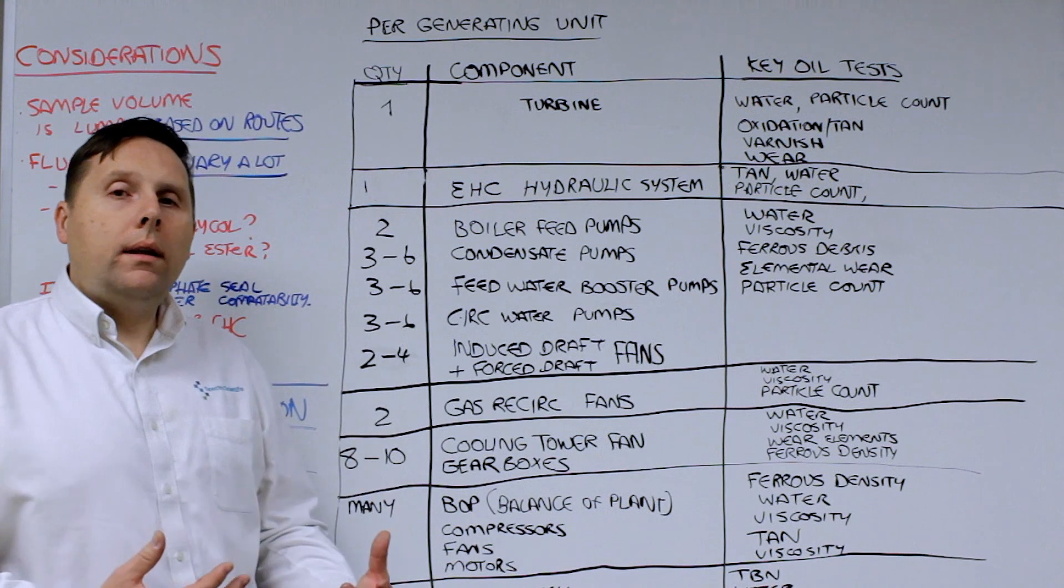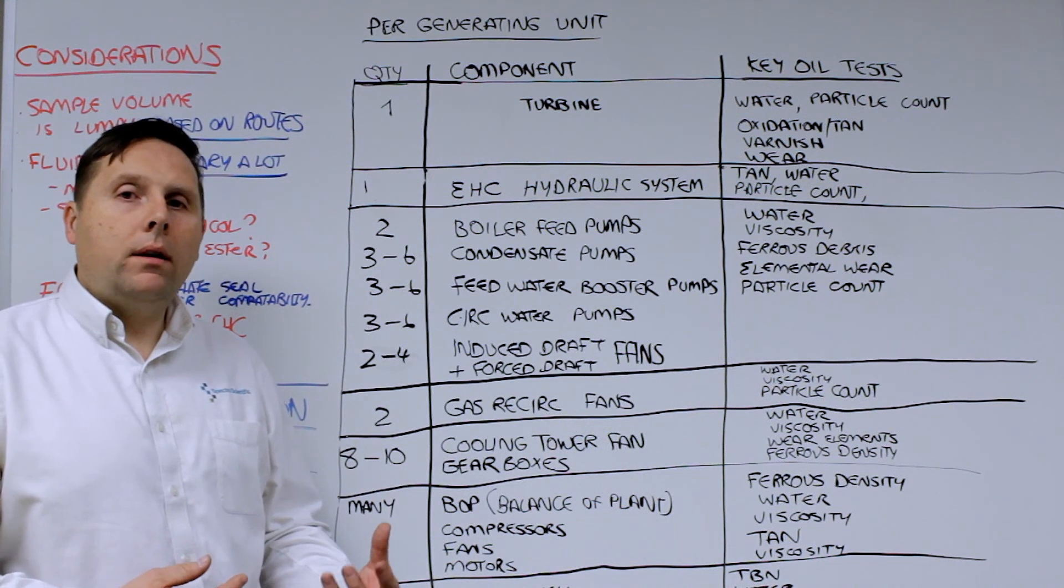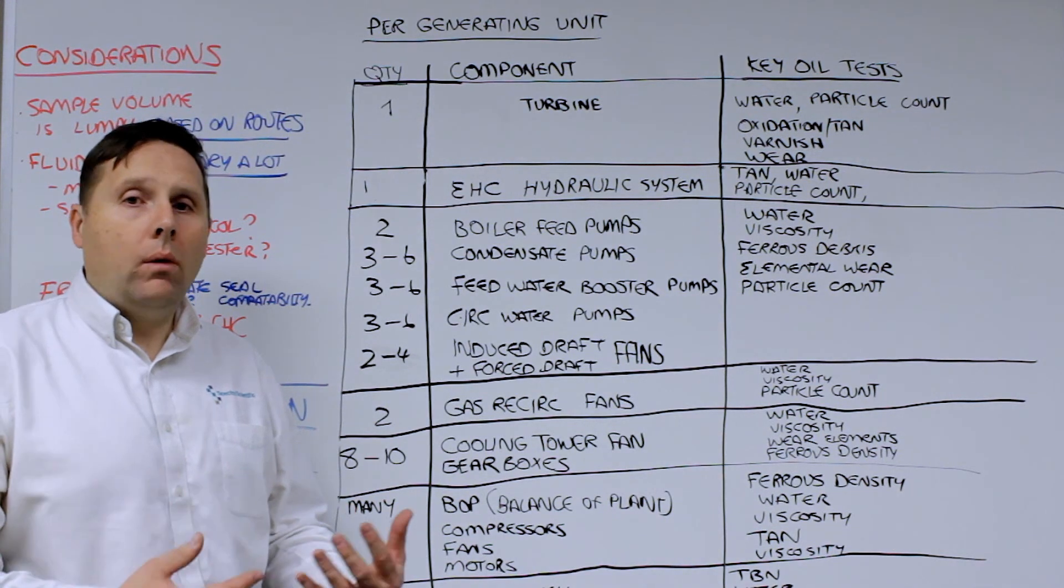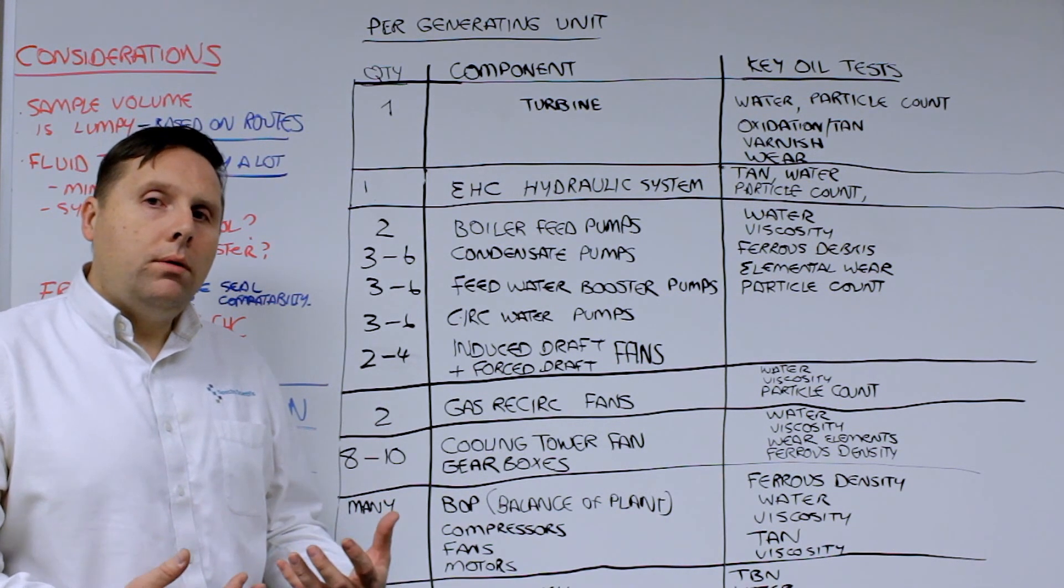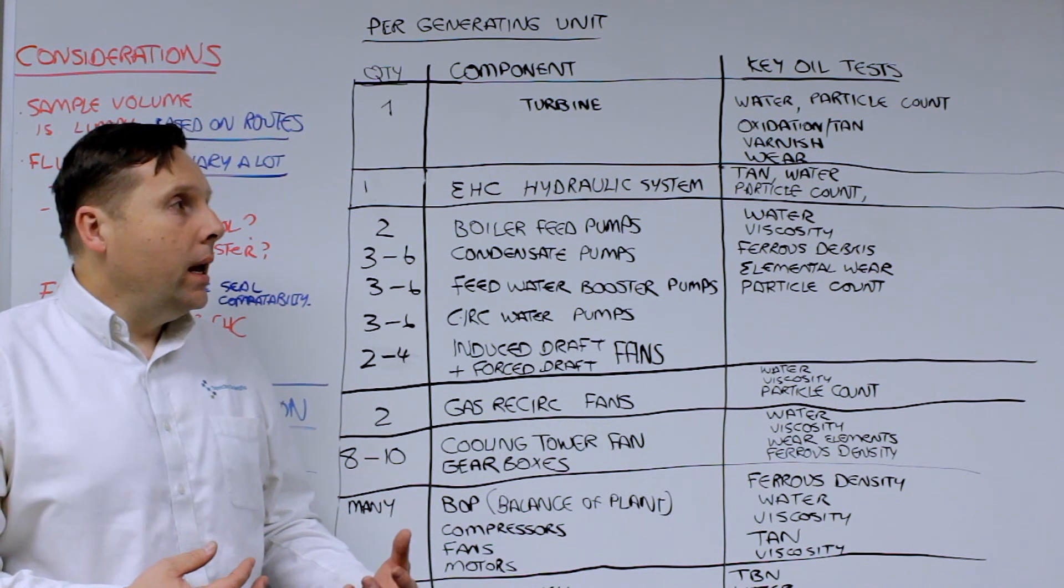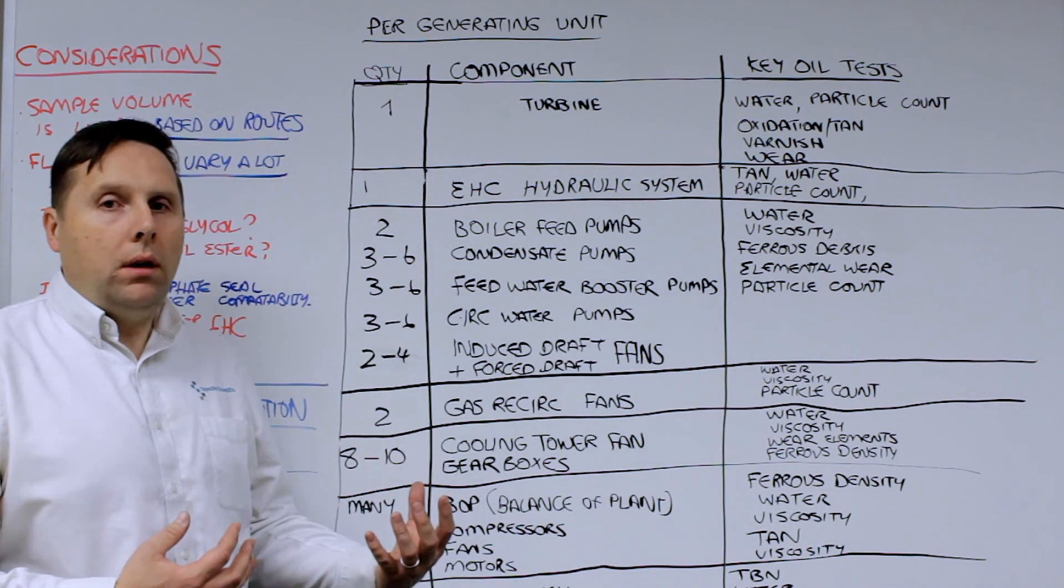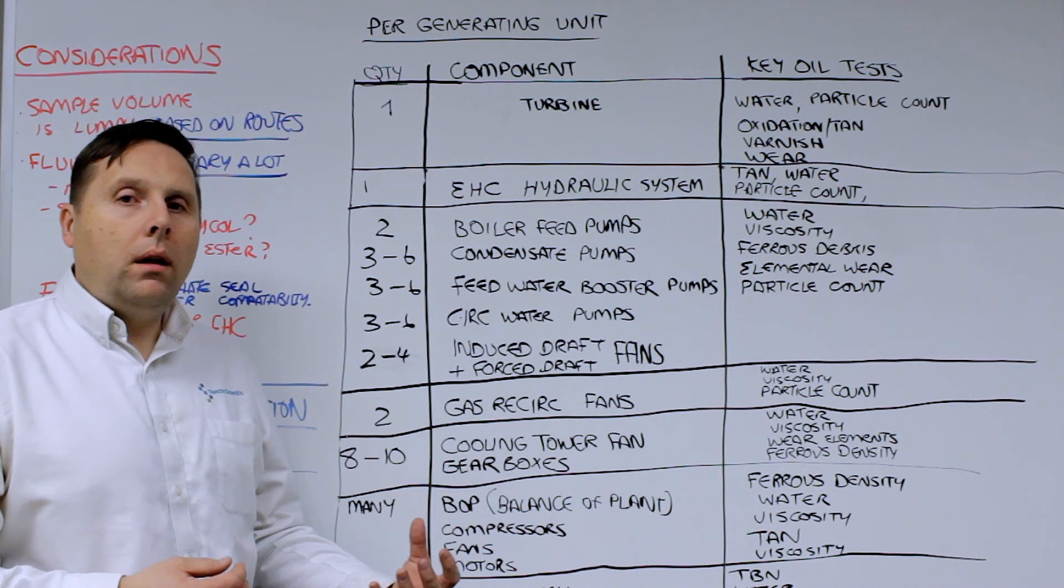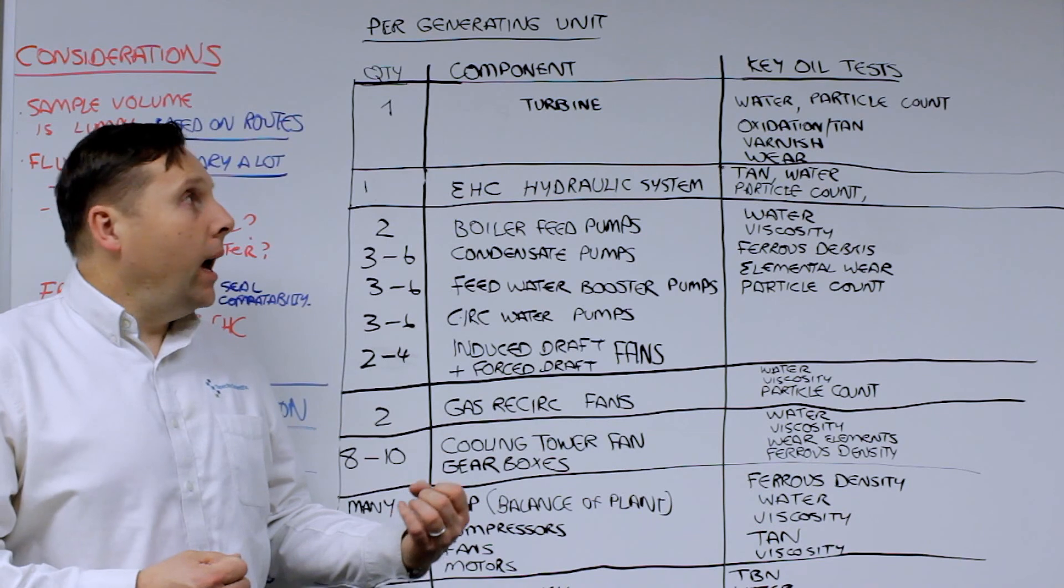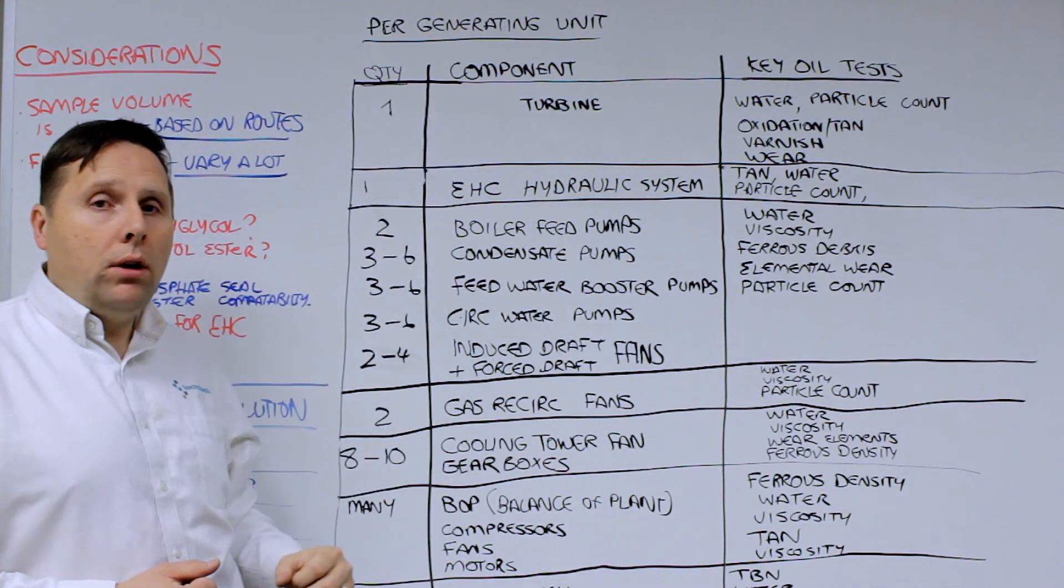So how is it that these power plants can generate that amount of samples based on a megawatt size? Well, one way to be able to estimate and understand how many samples are present is to look at a typical generating unit and the associated components and auxiliary equipment that's necessary to generate power.